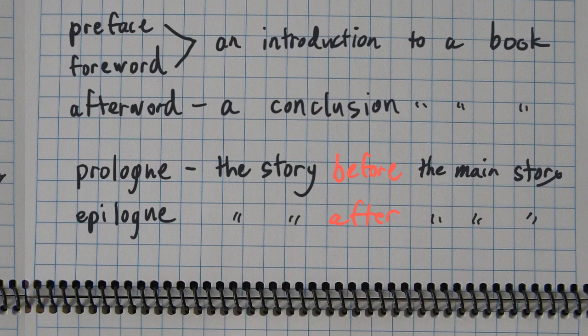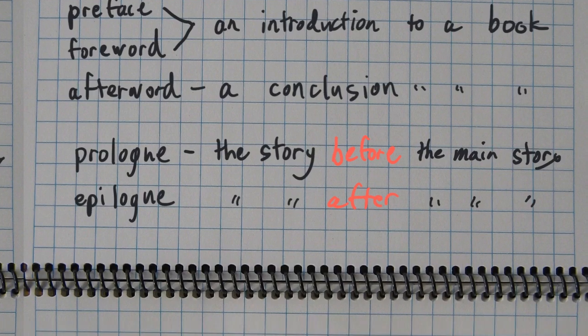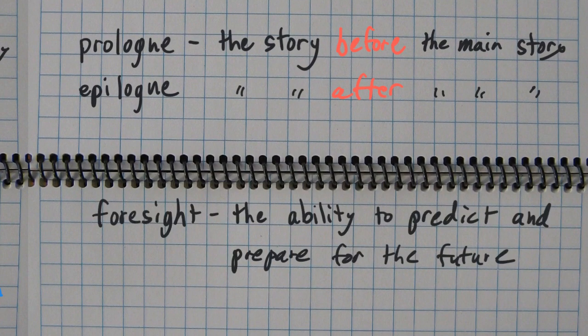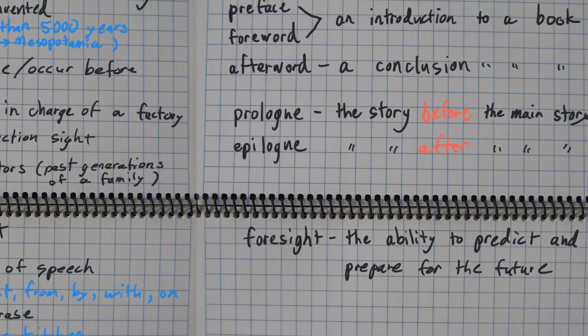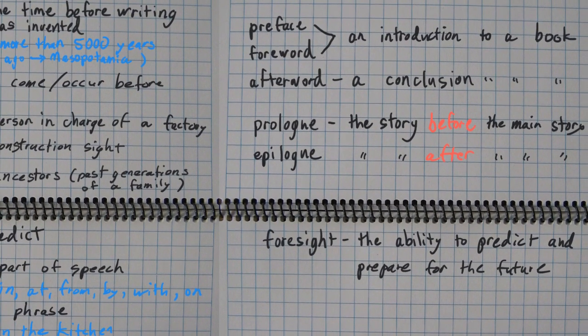And there's one word I forgot, so last one, which is foresight, which is the ability to predict and prepare for the future. And not predict like crystal ball, like magic, but just thinking about what might happen and being ready for it. If you can do that, you have good foresight.